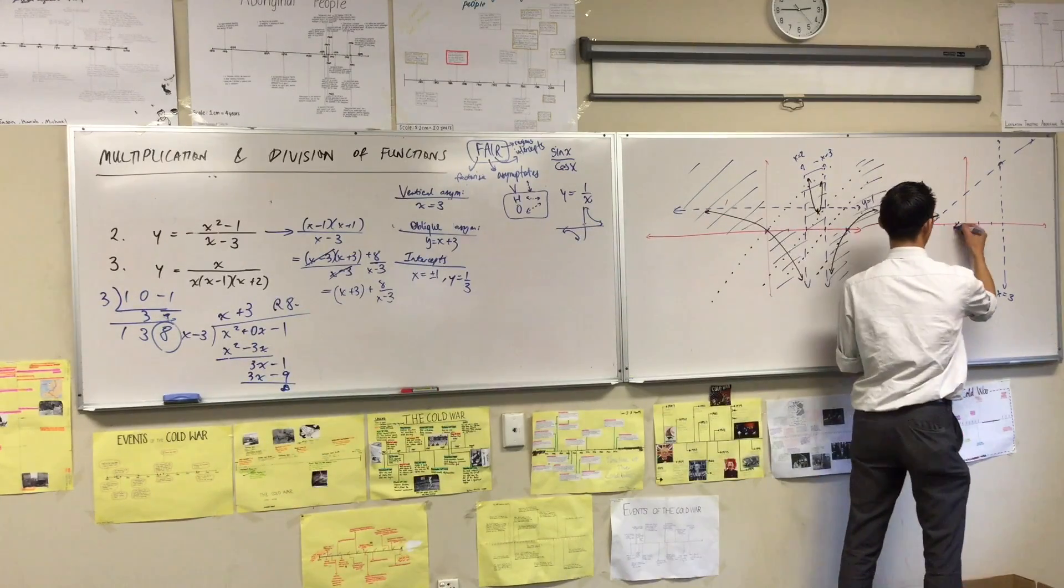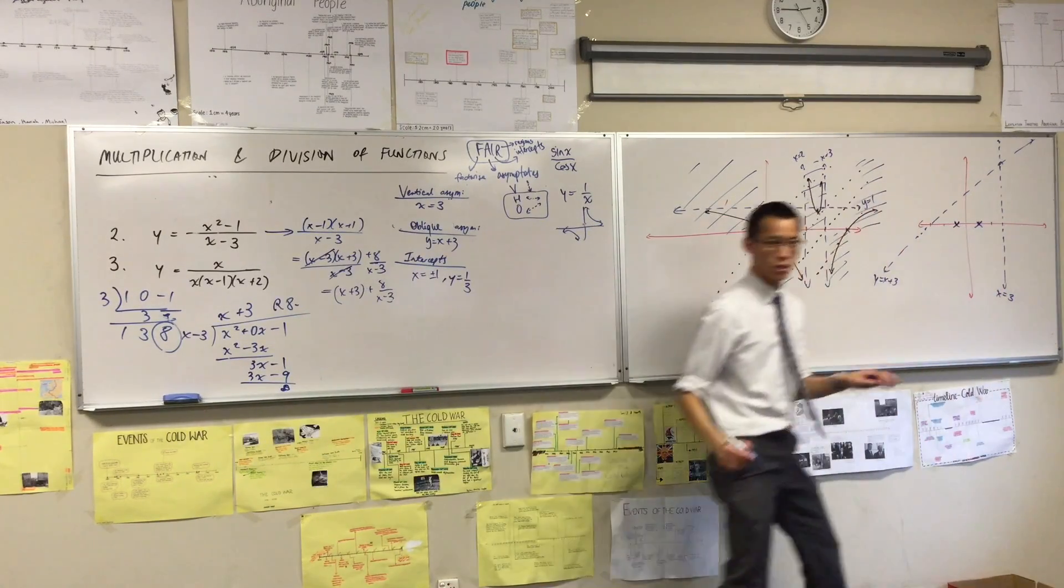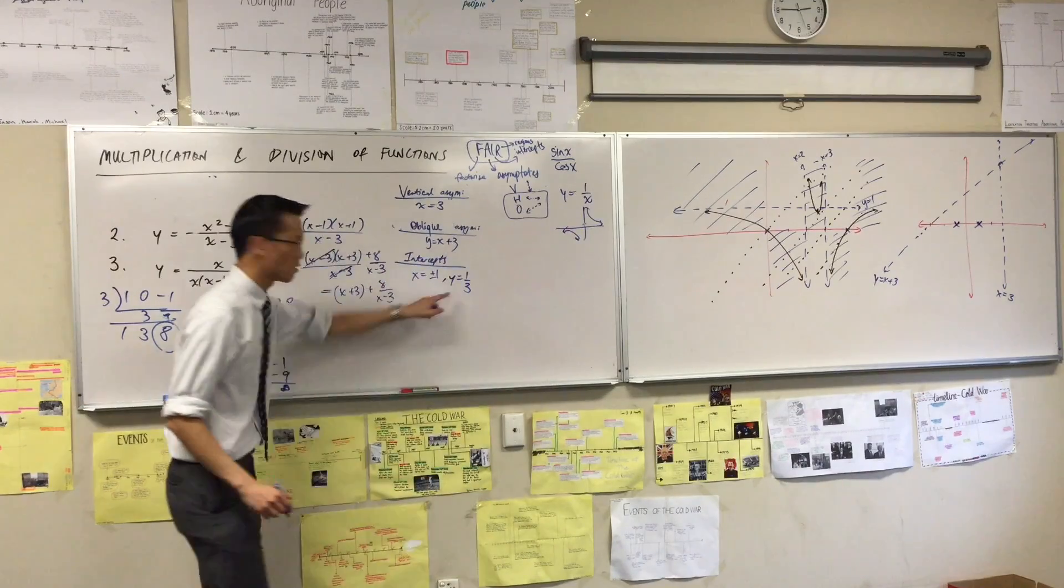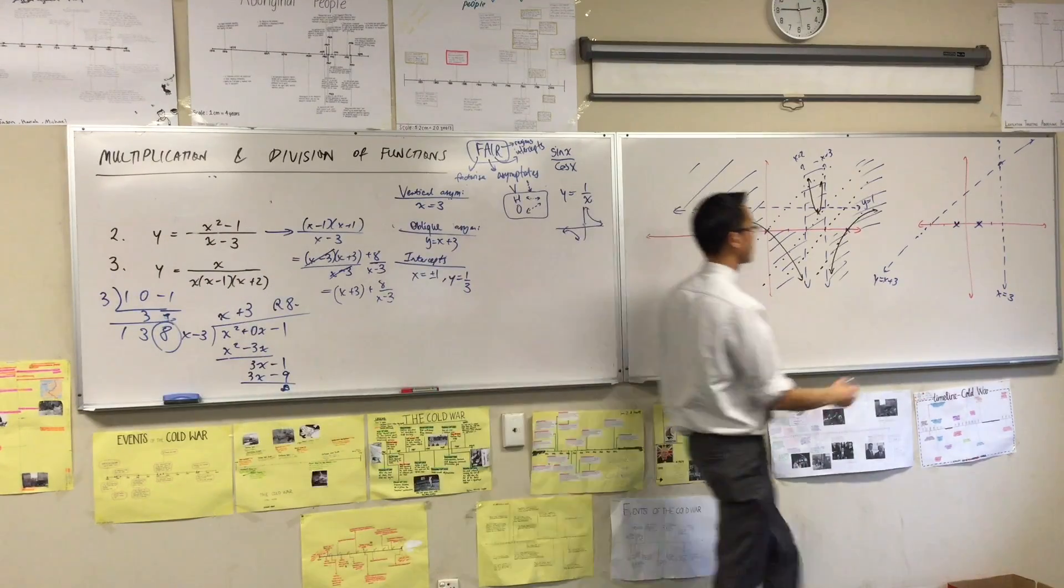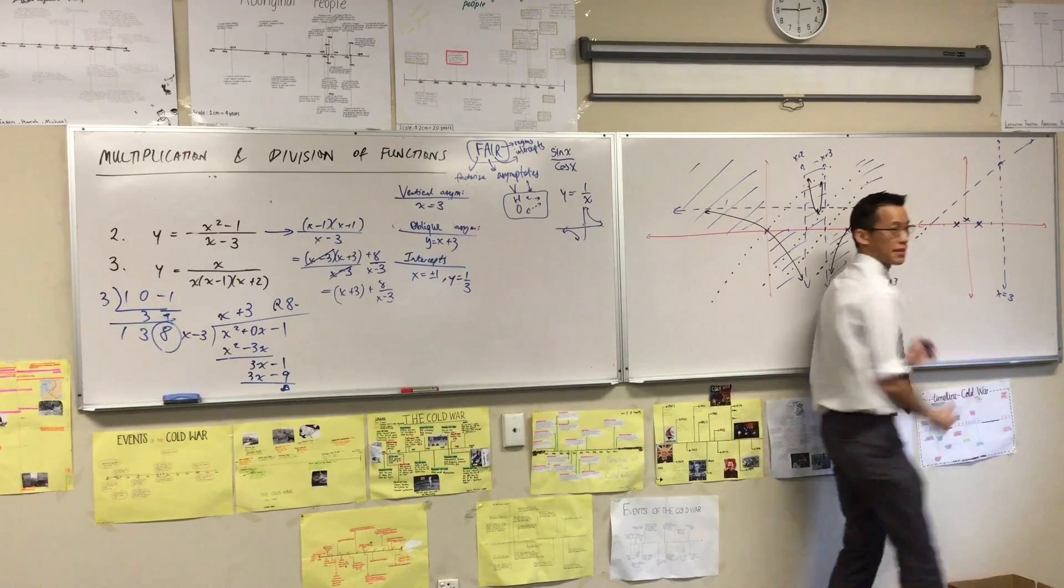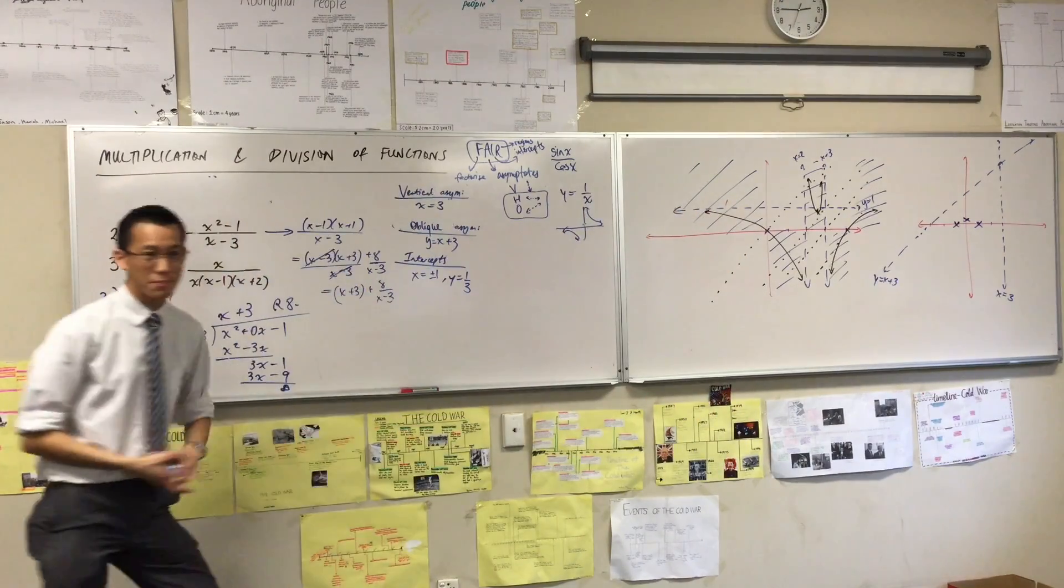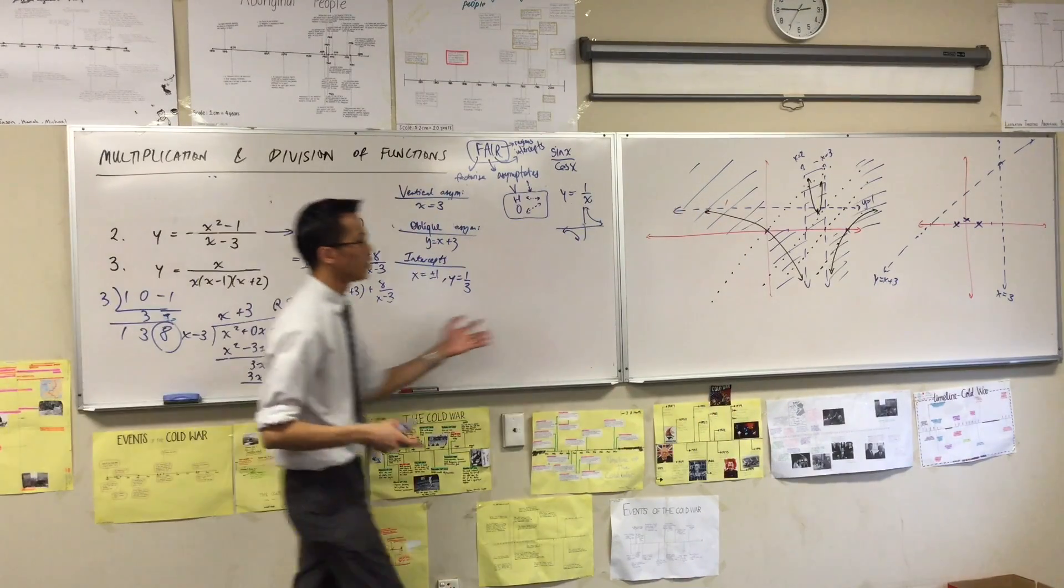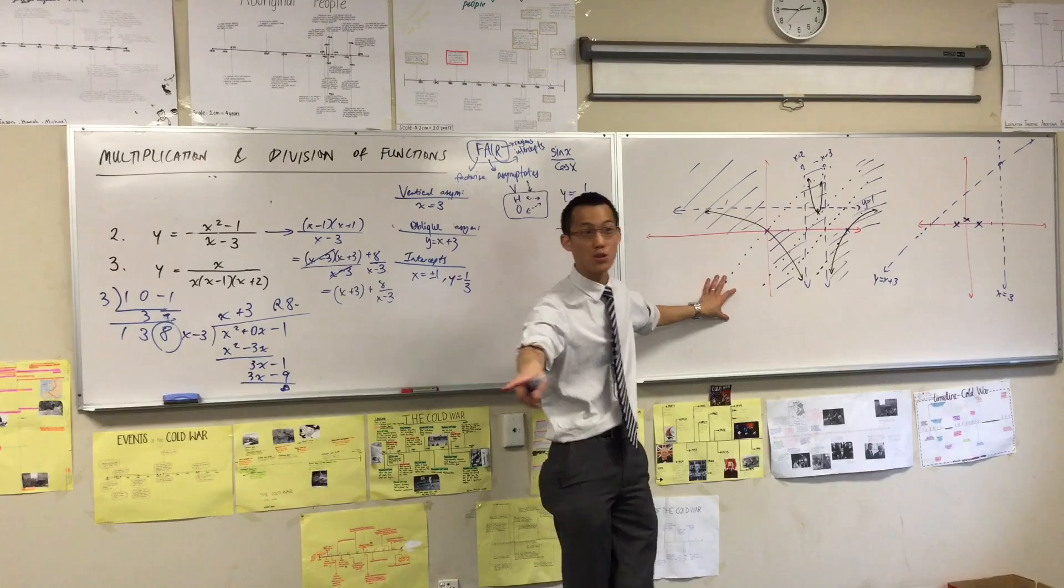What else I've got here? I've got a couple of intercepts, plus one here and here, and I've also got a y-intercept which is a third, something like that.